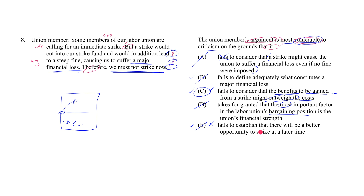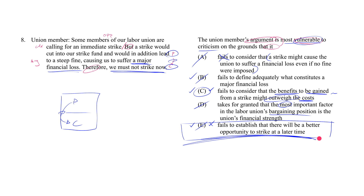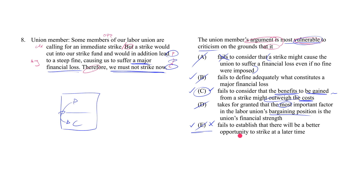I've spent a lot of time on why E isn't right and C is right because this type of trap is incredibly psychologically appealing. If you chose E or were hesitant between C and E, you need to understand both the psychological appeal of E and why E isn't doing argument analysis. Otherwise, the next time you encounter this trap — and there will be plenty of next times — you'll either fall for it again or waste valuable time being indecisive between E and the correct answer.